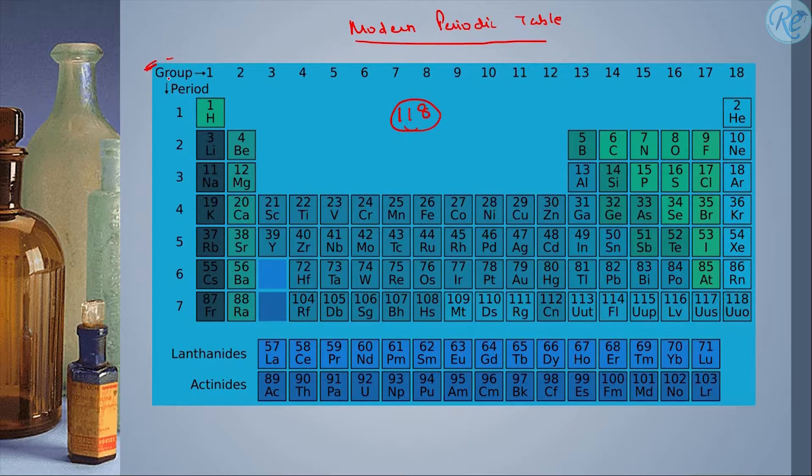Here, we have 18 groups. Groups as in this is the first group, second, third to twelfth, thirteenth group, fourteenth, fifteenth, sixteenth, seventeenth, and eighteenth group.